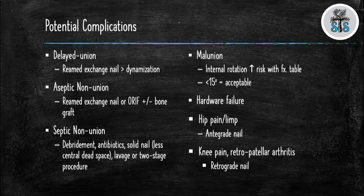Delayed unions can occur. Treatment for delayed unions can be either reamed exchange nailing or dynamization of the pre-existing nail — removing the static locking screw to allow for compression along the nail. This works approximately 50% of the time. Aseptic non-unions can be treated with reamed exchange nailing or open reduction internal fixation with or without bone graft. Septic non-unions would be treated with debridement, appropriate antibiotics, and exchange of the solid nail with lavage, or a two-stage procedure.